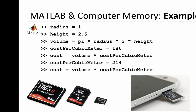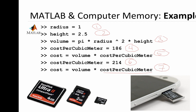We're going to enter a number of commands into MATLAB: first to specify radius, then height, then volume. Then we'll specify the cost per cubic meter — initially $186. Then we calculate the cost in terms of volume and cost per cubic meter. Then we revisit and modify the cost per cubic meter variable, and finally update the original cost value using the new cost per cubic meter calculated in the previous step.